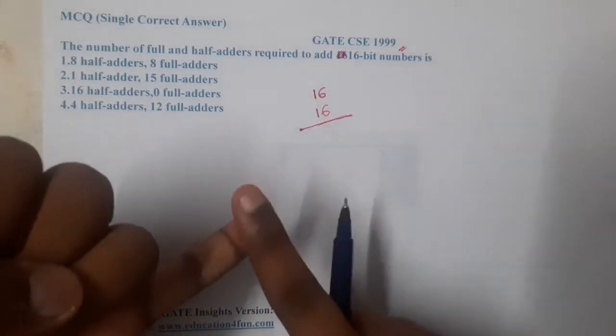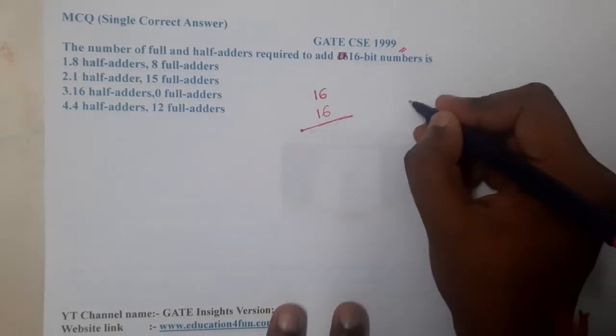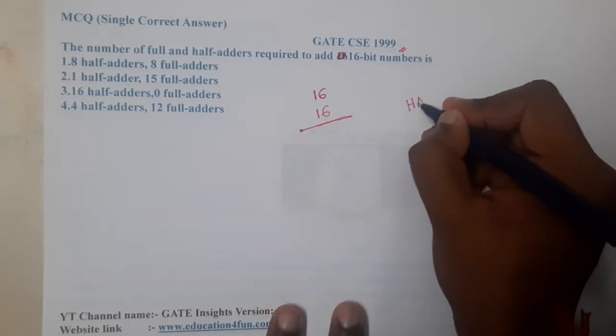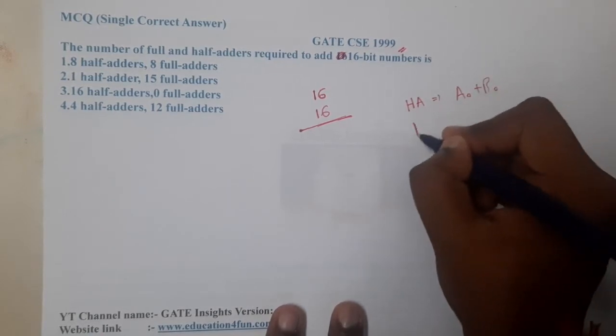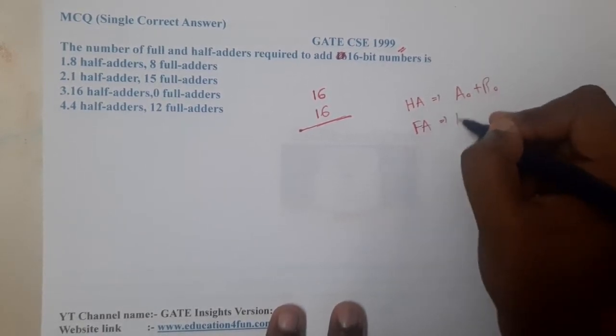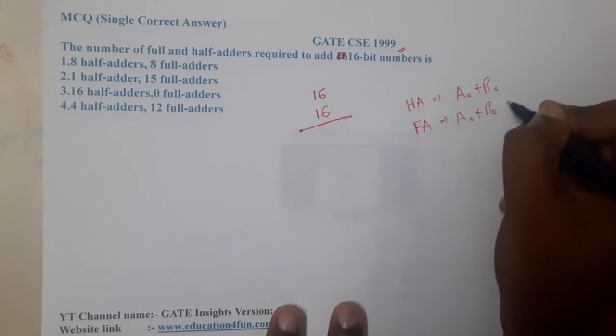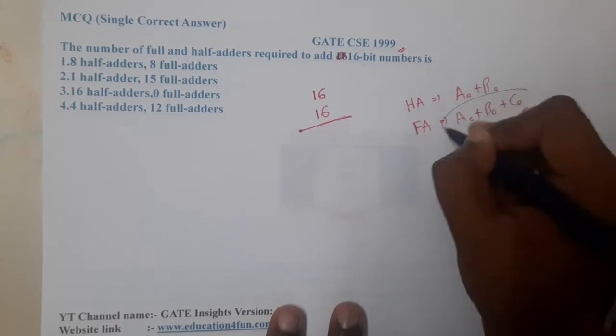What exactly is half adder? When you want to add two numbers, we use a half adder. But what about full adder? When you want to add three bits, meaning whenever there is a chance of a carry, you need to use a full adder. In the rest of the places you can use half adder.